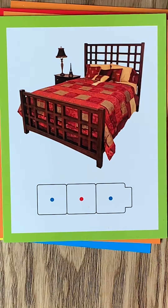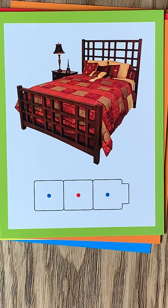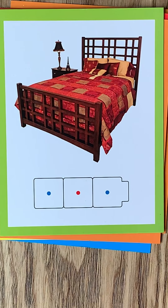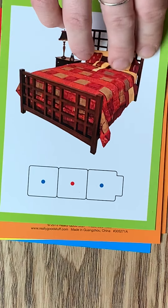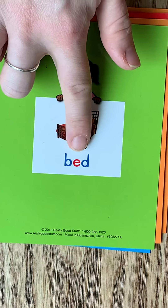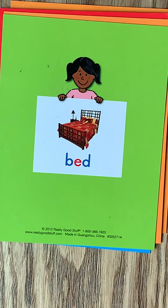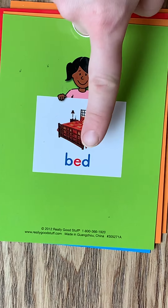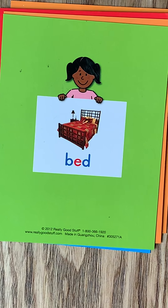Number six is bed. B-E-D. Bed. Take a moment to write it in your journal, and then I'm going to get ready to flip. Bed — double check that your B is facing the correct way, and your D is facing the correct way.